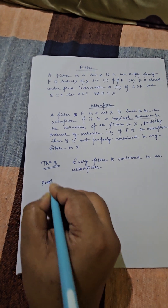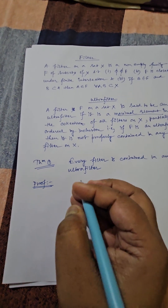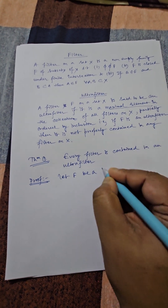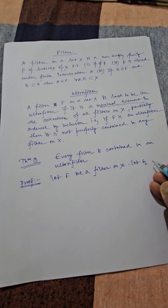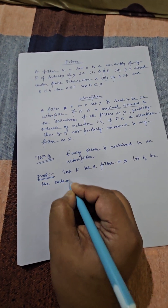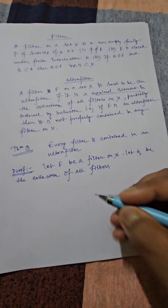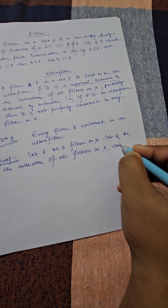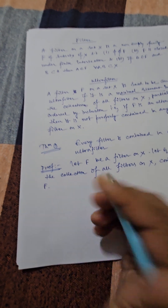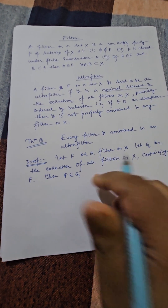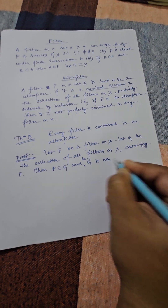To prove this theorem, we consider it as a particular application of Zorn's Lemma. Let F be a filter on X, and let G be the collection of all filters on X containing F. Since F itself belongs to G, G is non-empty.